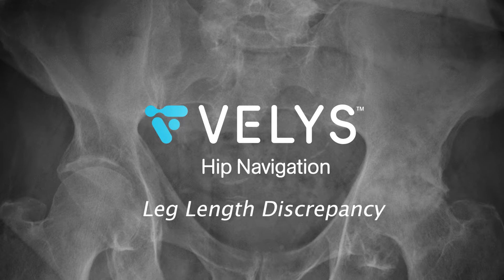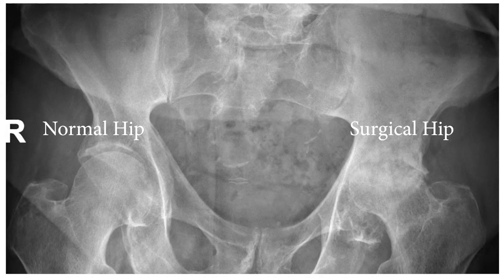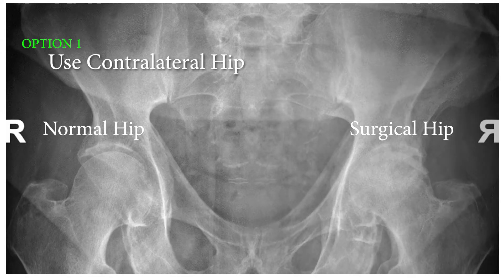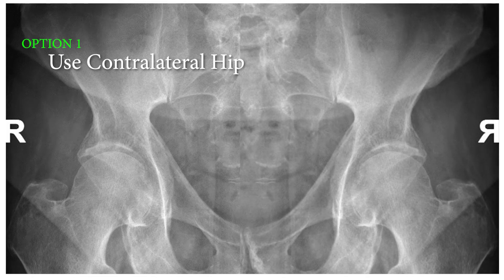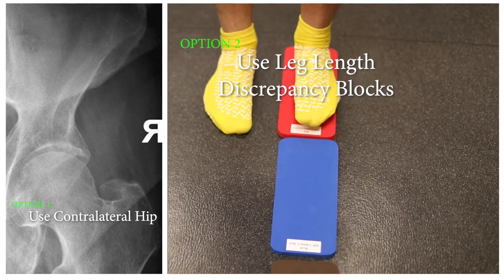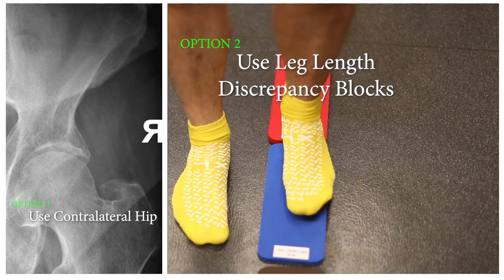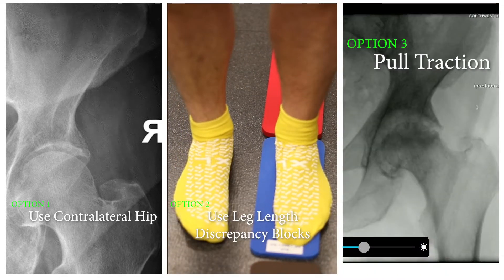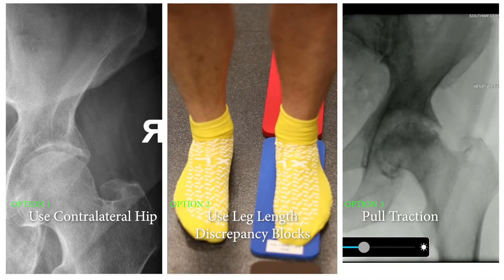This video is a case example of using Vela's hip navigation to optimize leg length in the setting of a significant leg length discrepancy. There are three different ways to use the Vela's software during surgery to obtain leg length data to make an intraoperative decision for final implants. I will use all three methods here in the same surgical case to demonstrate the breadth of the Vela's software, using the same progression as at the time of surgery.